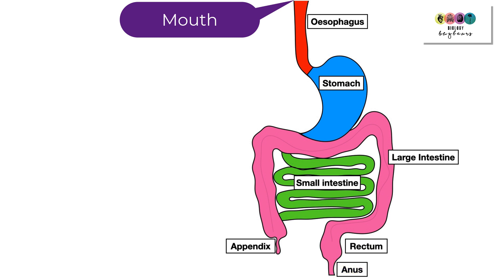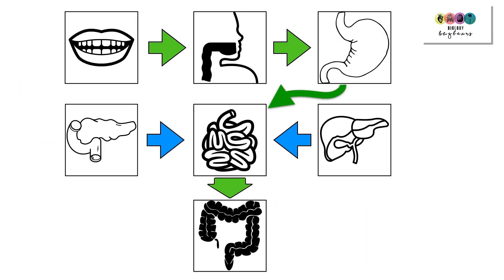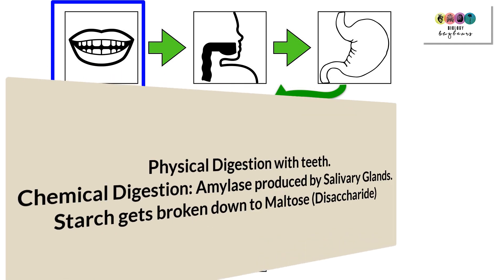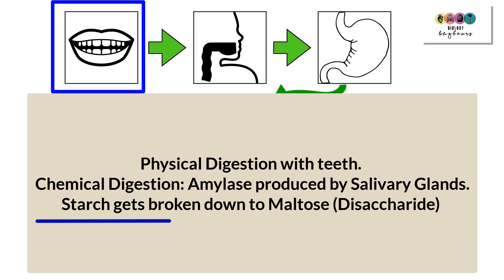Digestion commences in the mouth. Here the food is physically digested as teeth crush, tear, and grind the food with the help of the tongue into a bolus. There is also chemical digestion happening in the mouth because salivary amylase is produced, and it acts on the starch in the bread or carbohydrates and converts it into maltose.